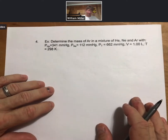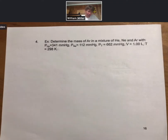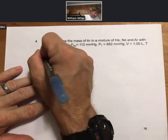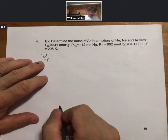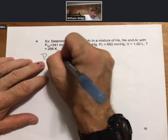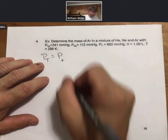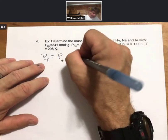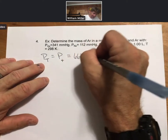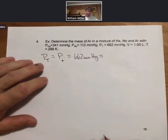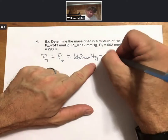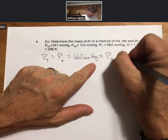Now this is a typical example for Dalton's law of partial pressures. Determine the mass of argon in a mixture of helium, neon, and argon with the following pressures. We know the total pressure, P_T. And it looks like they use capital T or I use capital T. I'll also use lowercase t. Is 662 millimeters of mercury. That's going to be equal to the partial pressure of all three of the gases added up.